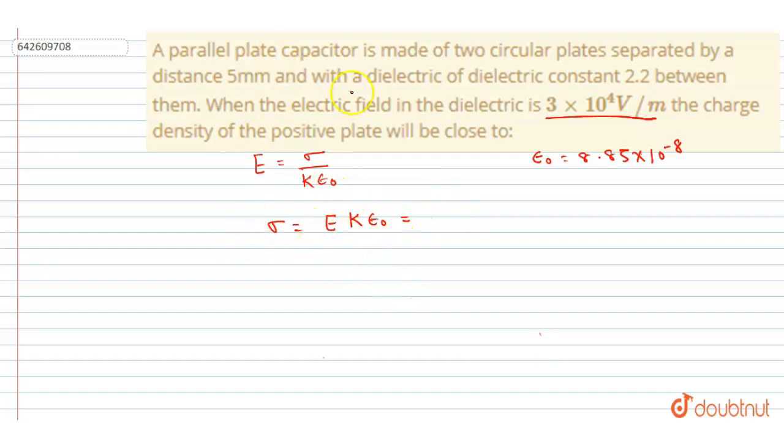also. So just multiply them and we will be able to solve this. So electric field is this, dielectric constant is 2.2, and epsilon naught in its SI unit is 8.85 × 10^-8. So after